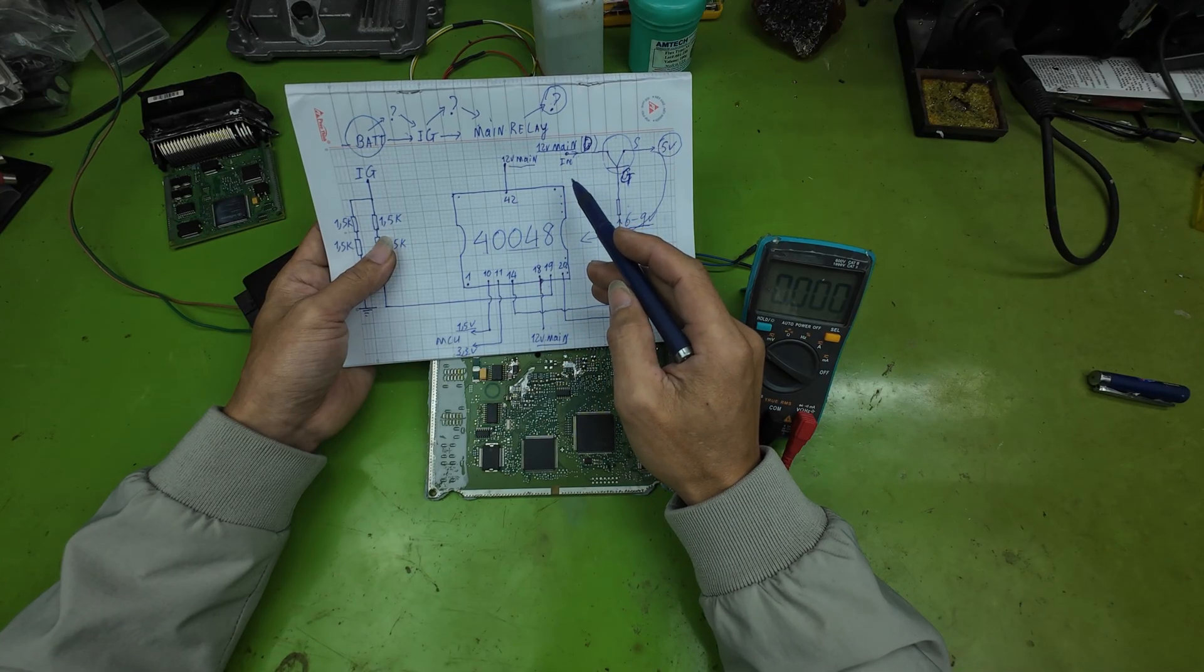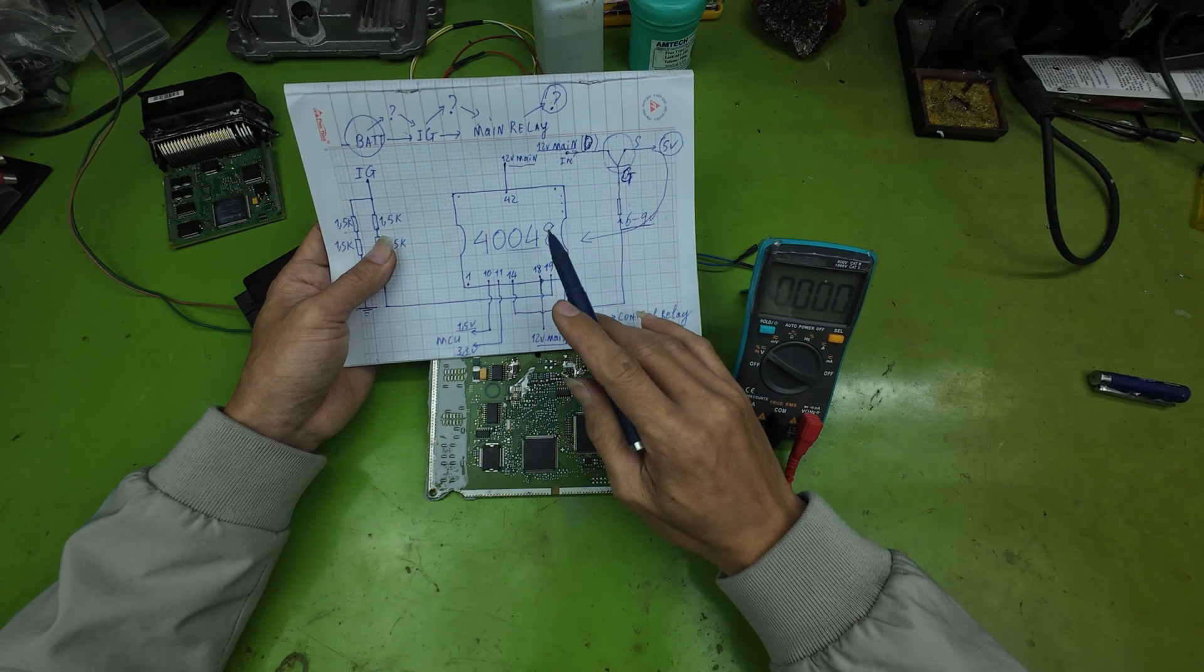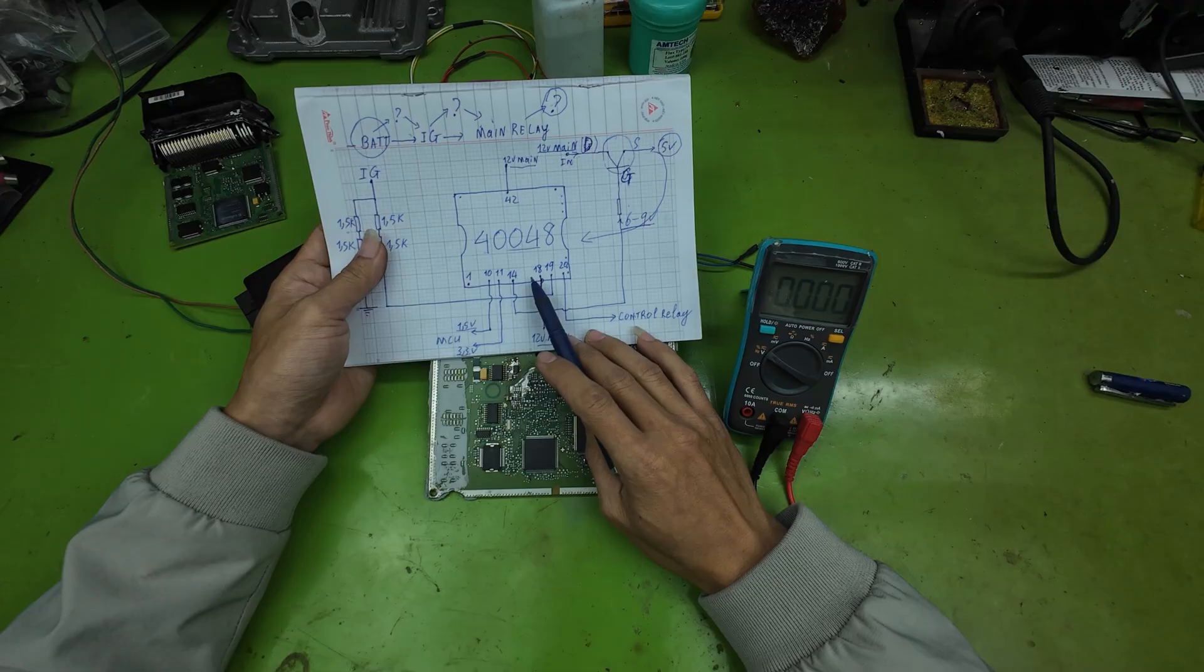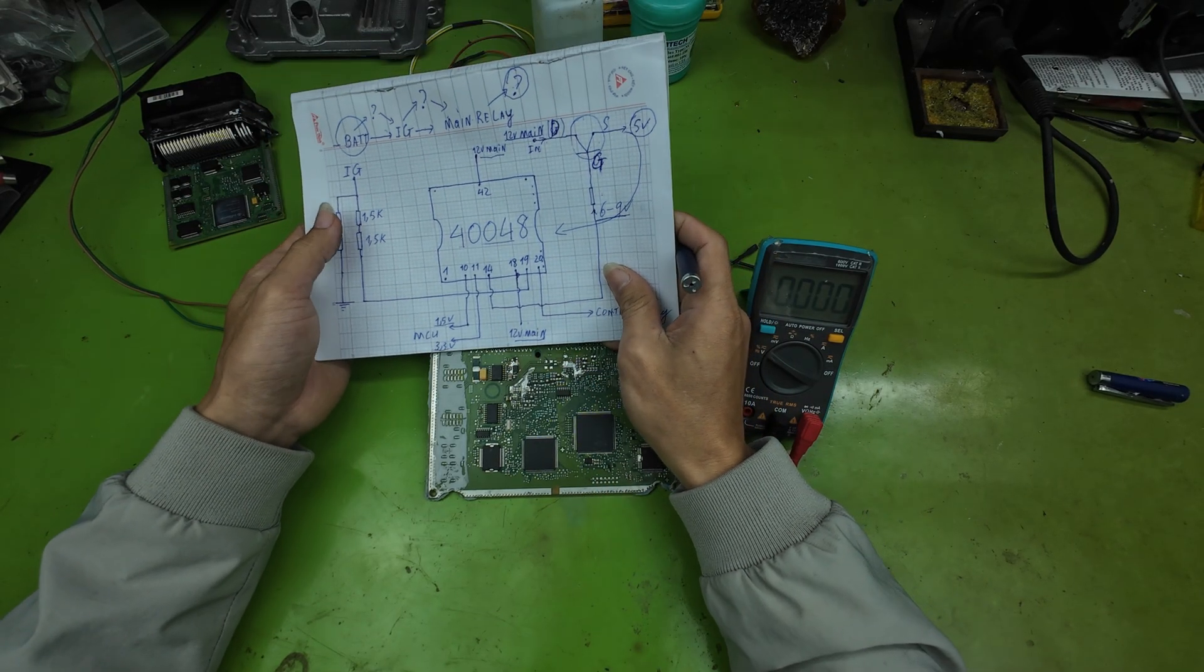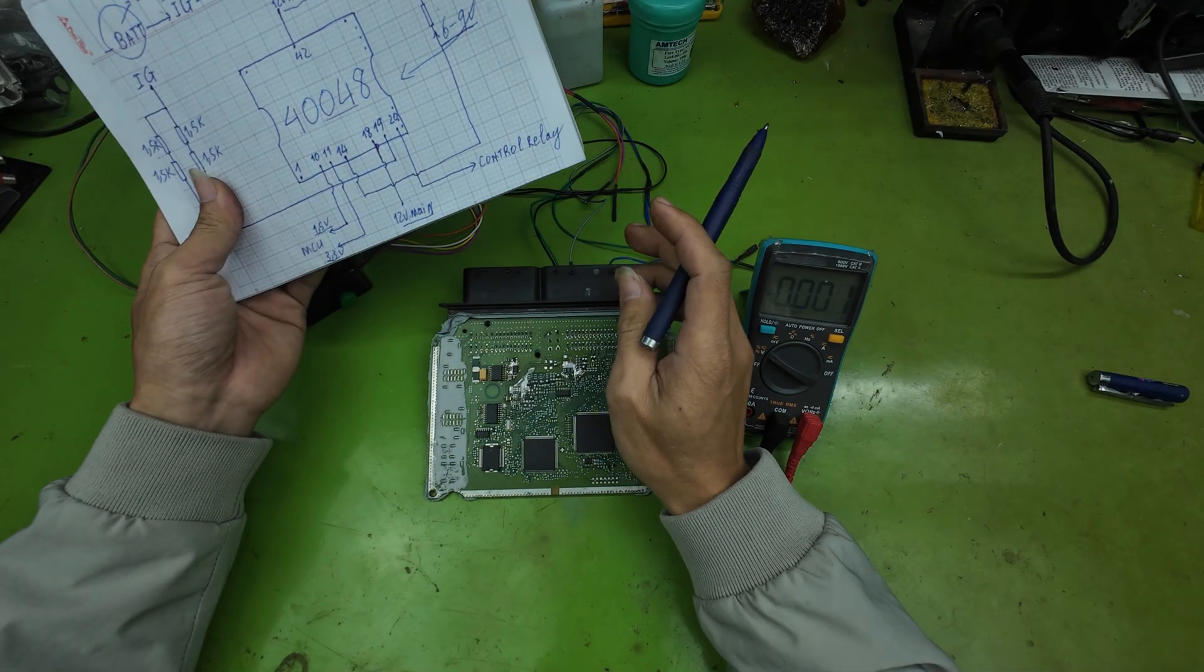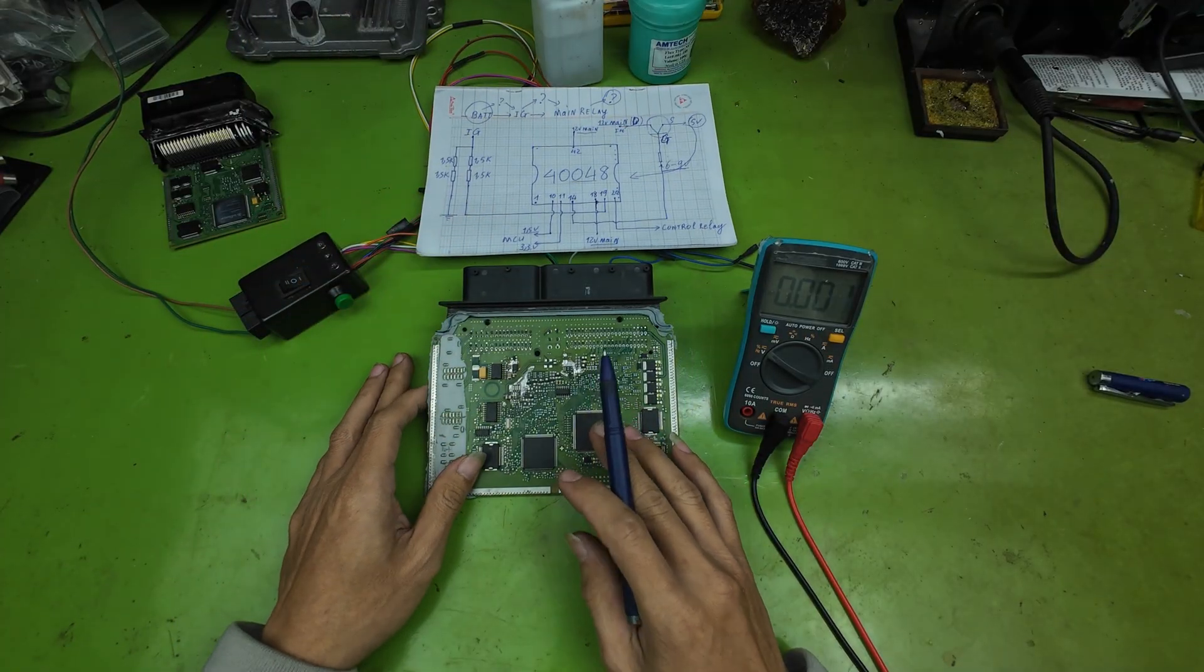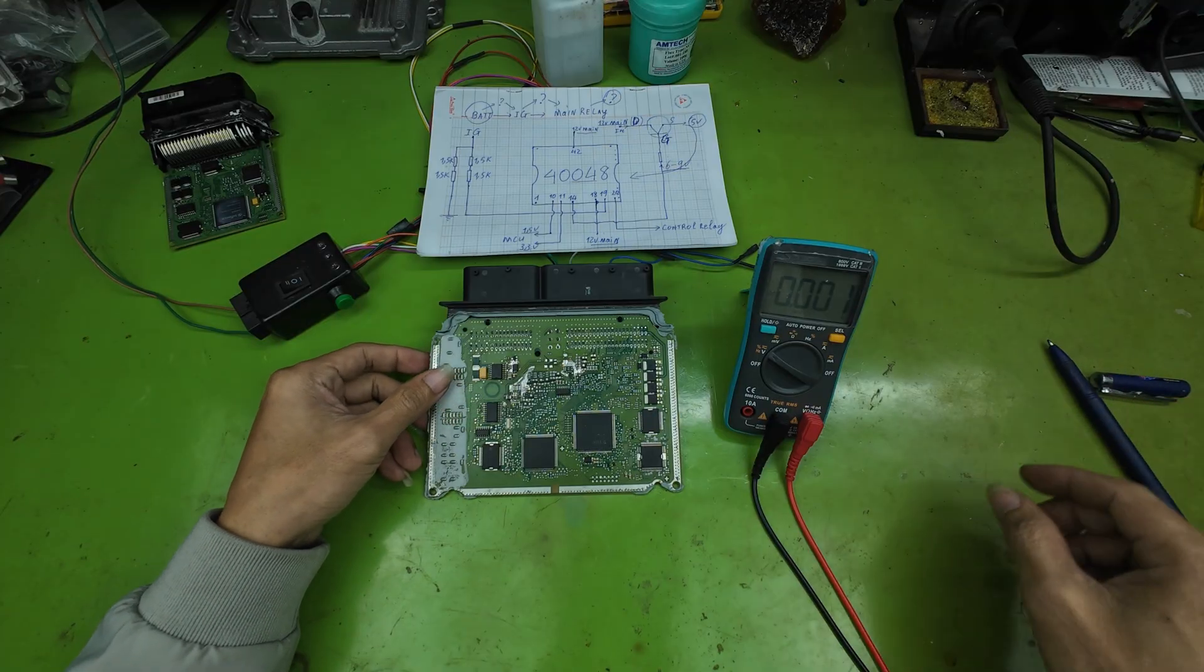Therefore, we need to continue checking the next required conditions after the main relay engages. Specifically, we must verify whether the post-main relay power lines are supplying correct voltage to the IC4048, and whether this voltage reaches the D-pin of the 5-volt power MOSFET. Now, we will proceed to measure and verify each condition step-by-step exactly as I have outlined. Follow this sequence to pinpoint why the ECU has not entered its operating state.